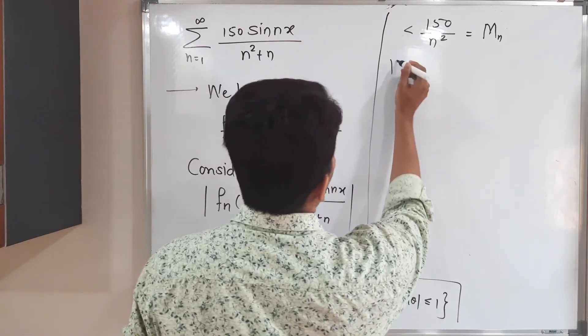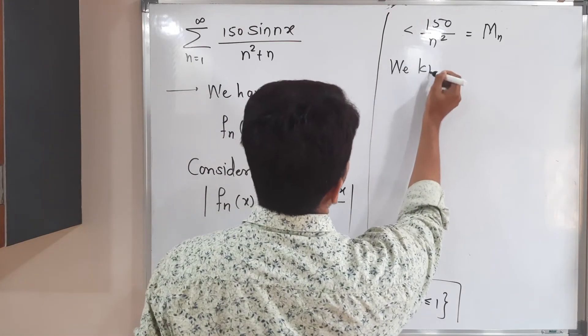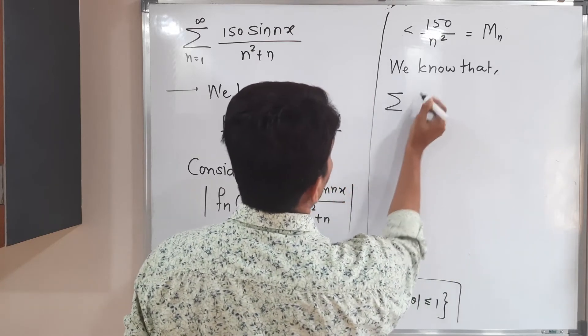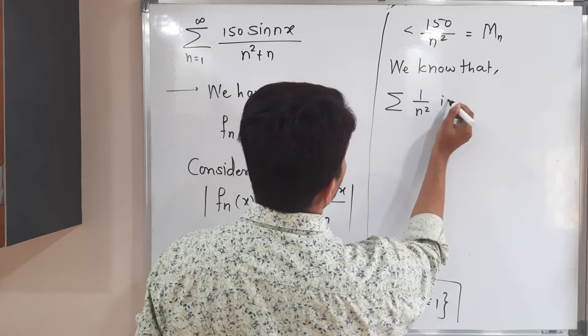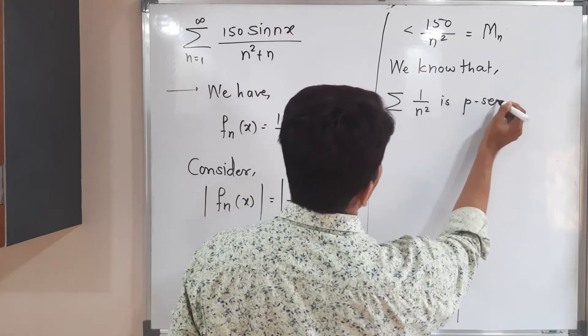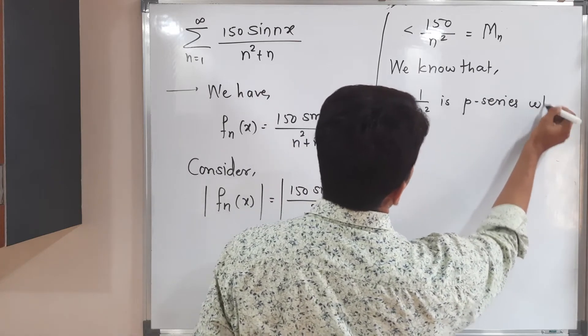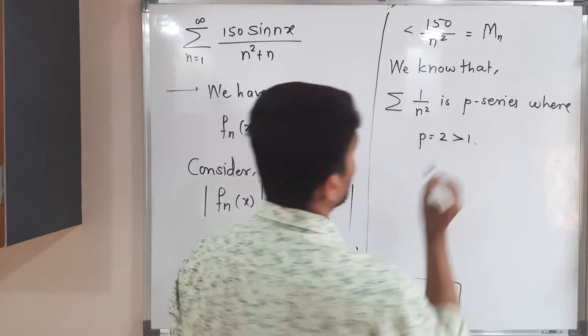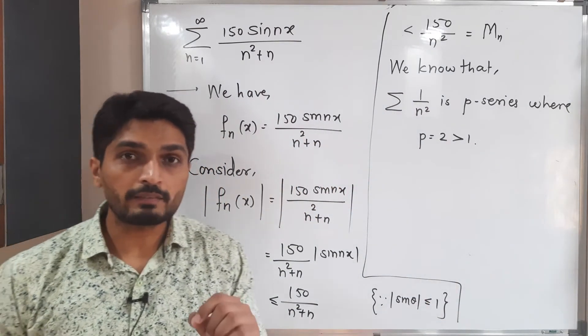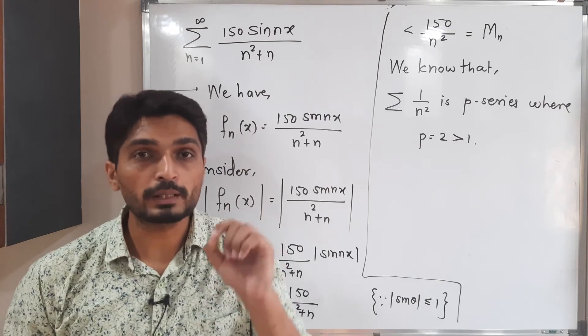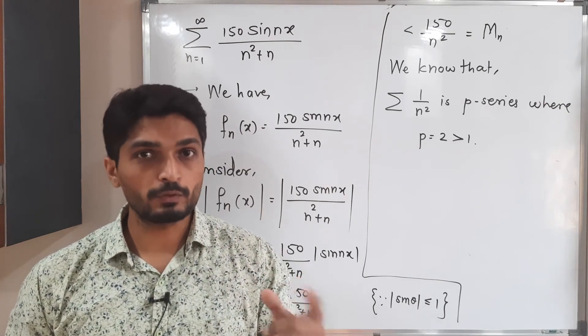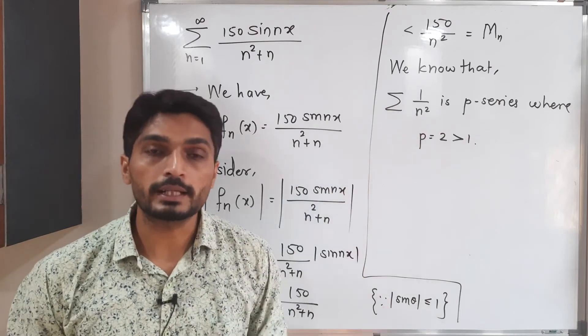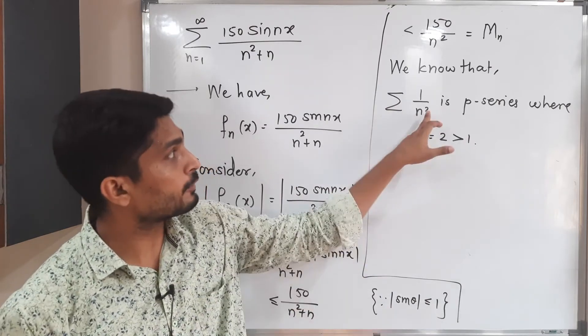So we know that, after that, what will I say? We know that summation 1 upon n square is p-series, is p-series where p is equal to 2, which is greater than 1. When we have a series of this form summation 1 upon n raise to p, we call it as a p-series. Here value of p is 2.